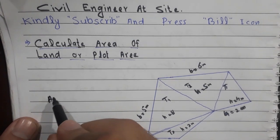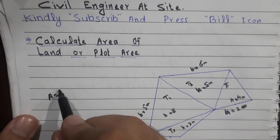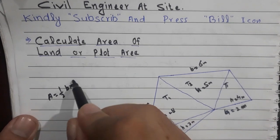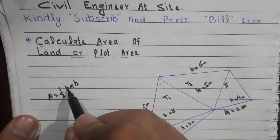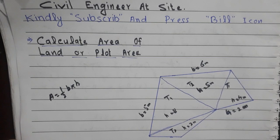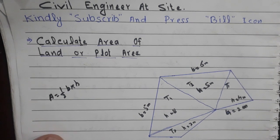Now, as you know, the area formula for a triangle is: Area = (base × height) / 2, that is, half of base multiplied by height. We have to find the area of all four triangles and then find the sum of all those areas.